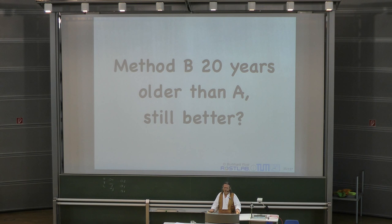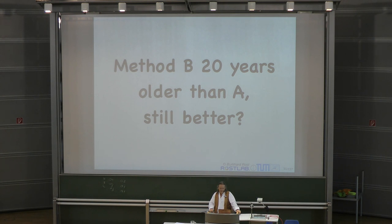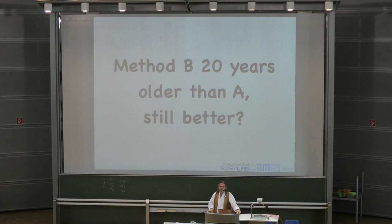Now we get to the next question. Method B — which in this model is the better one, statistically significantly better — is 20 years old and it's still better. We know more proteins today, and method A has used all of these proteins and got 60%. Method B has not used them and got 63%. So is it better?